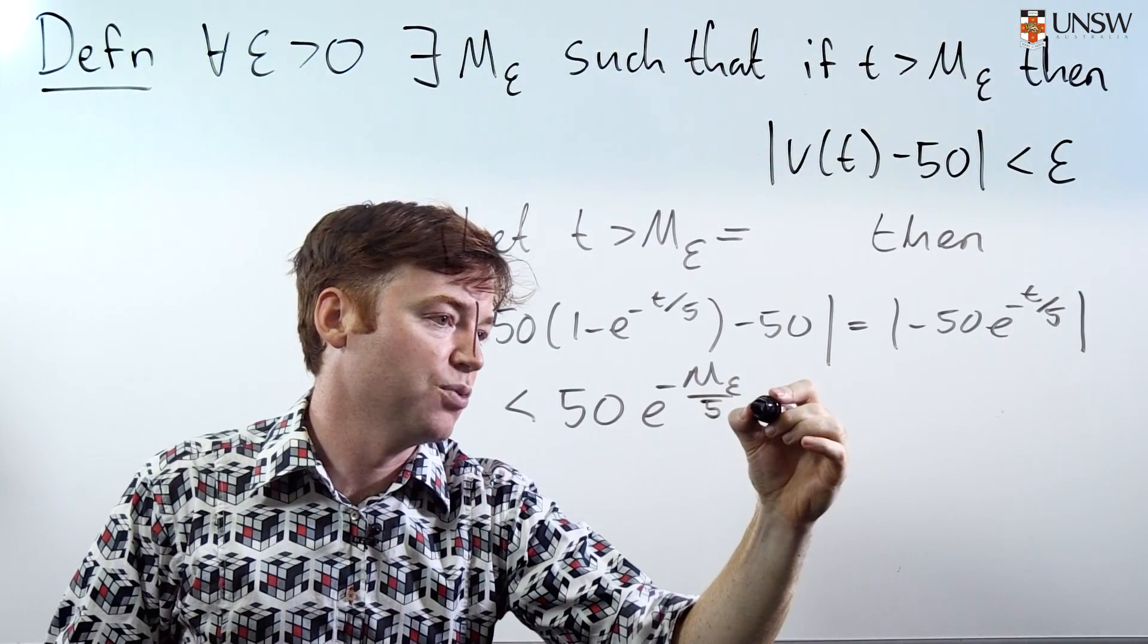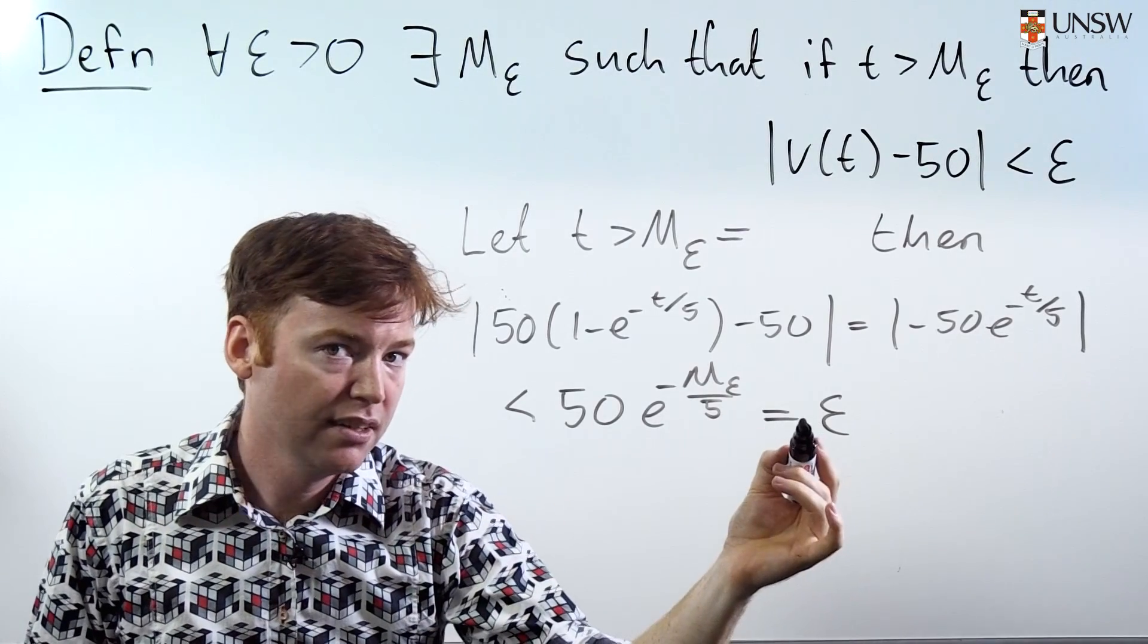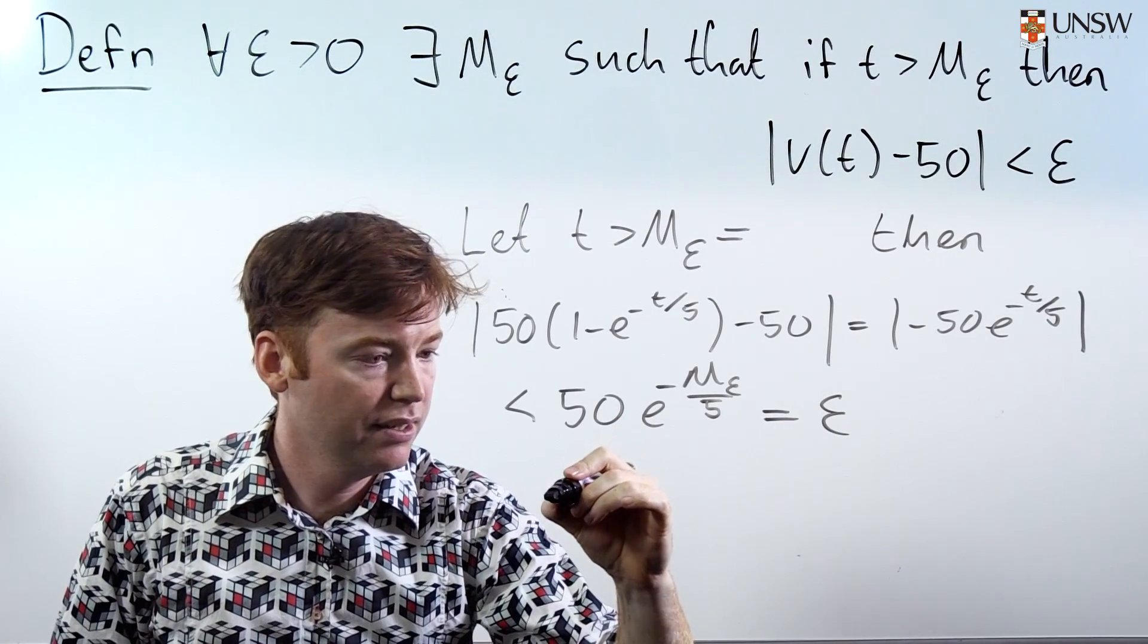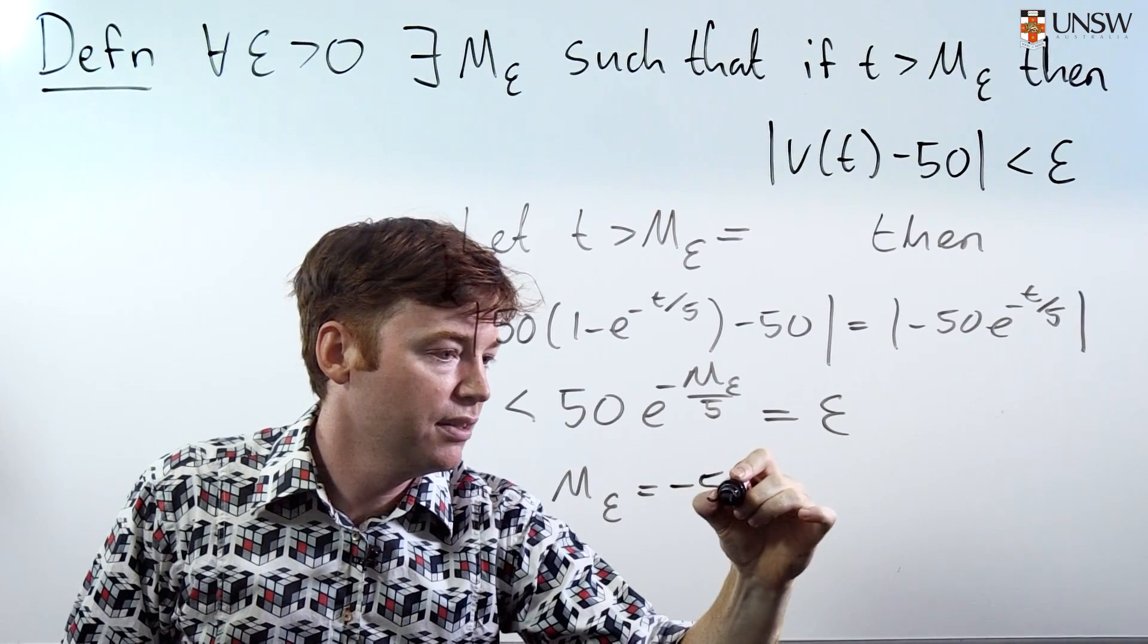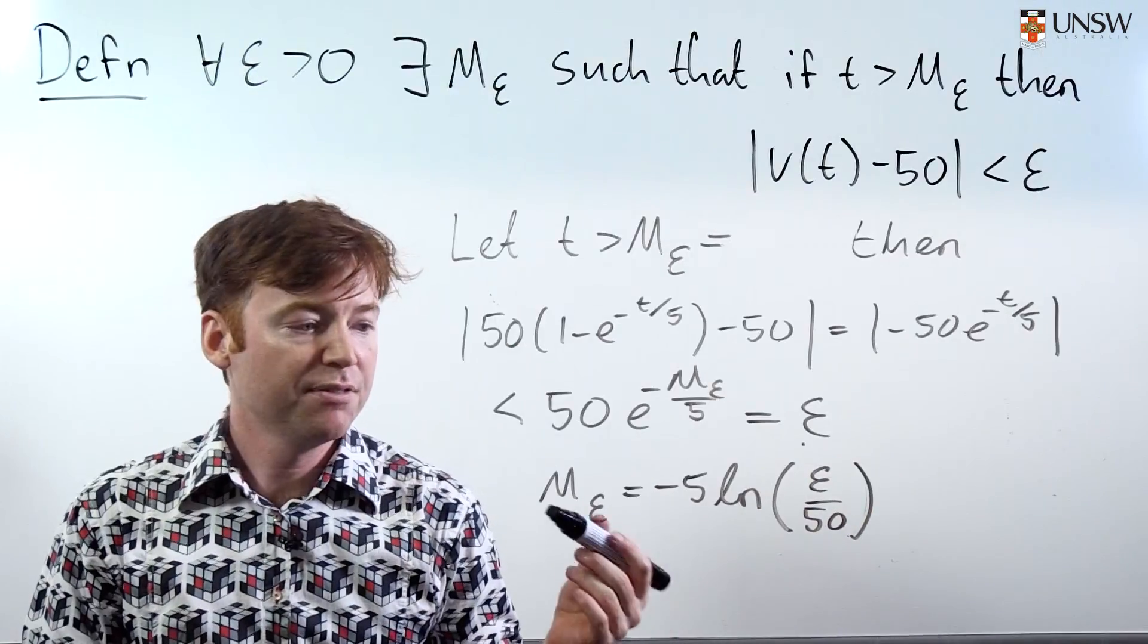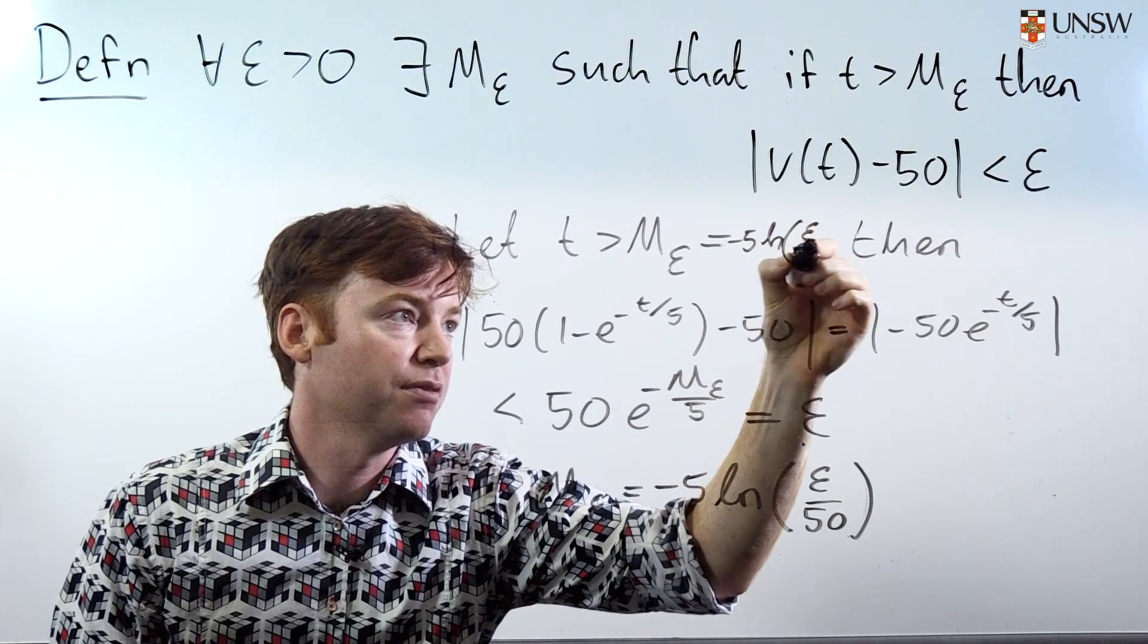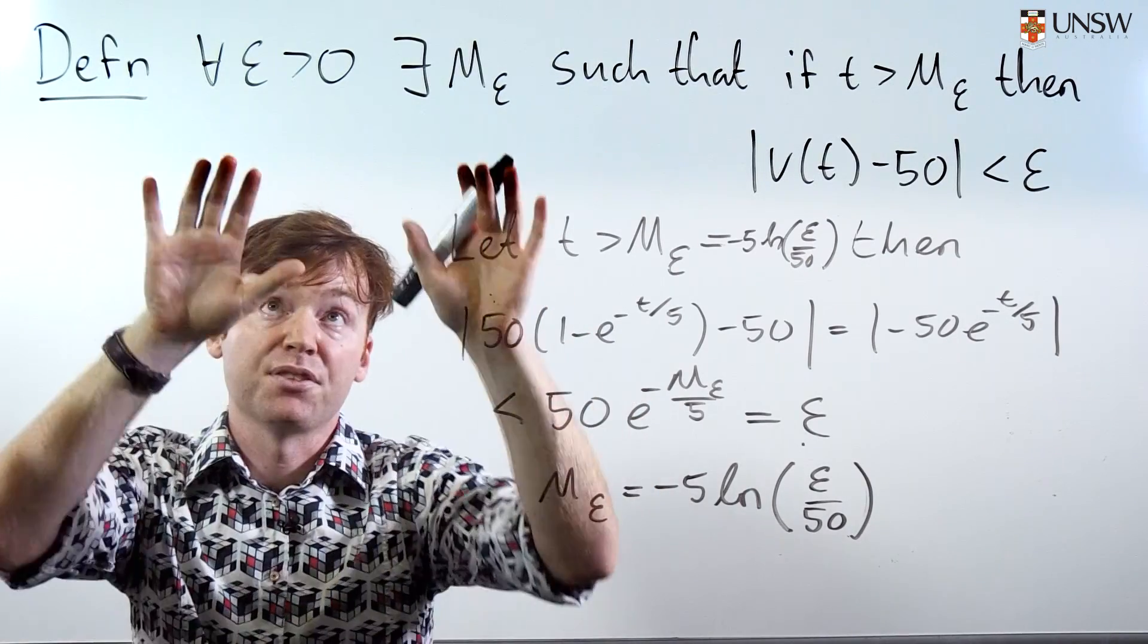And what I wanted was that this thing would be, this thing here would be less than epsilon. So I'll call this epsilon. And it's this line here that tells me how to choose my M epsilon up here. So I can unpack this and find out what M epsilon is in terms of epsilon. So if I take the 50 over there, I get M epsilon is equal to, let's see, negative 5 natural log of epsilon over 50. And now we've found what M epsilon should be to make this quantity less than epsilon. It should be, and we'll write it up here now because we know what it is, negative 5 LN epsilon over 50.